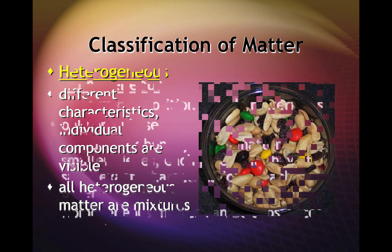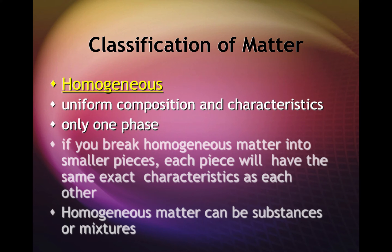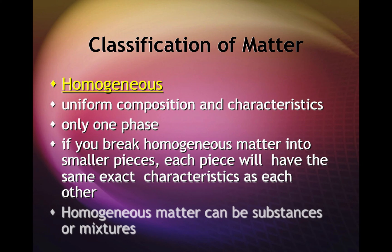All heterogeneous matter are mixtures. Homogeneous matter — the prefix homo means same type — has uniform composition and characteristics. It has only one phase, and it is the same type of material throughout the sample with the same characteristics. If you break a sample of homogeneous matter up into smaller pieces, each piece would have the same composition and characteristics. Homogeneous matter can be substances or mixtures.